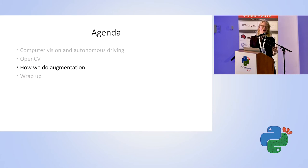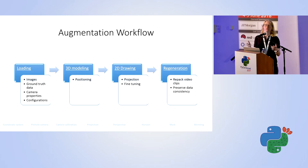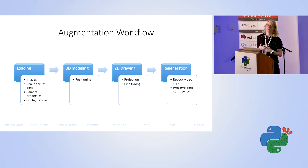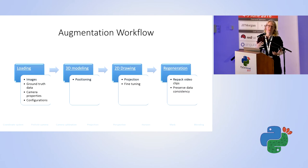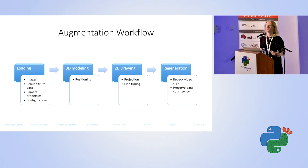Now let's get to the augmentation process. First, we have video clips and we load data from them — images, camera information, and ground truth data, the annotations that were done on these video clips. Then we do a 3D modeling of the road markings we want to add. For example, deceleration area markings are dashed lines close to existing road markings. After we do this modeling, we go to the image and draw the road markings we're interested in, and in the end we pack everything back to a video clip format our system can work with.